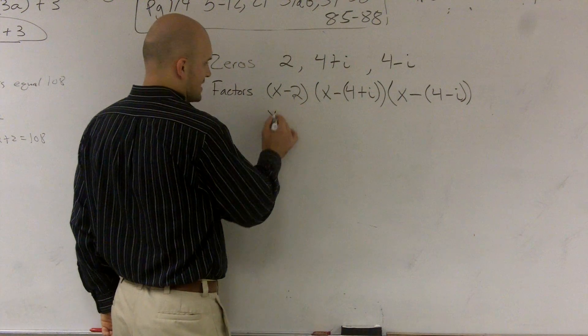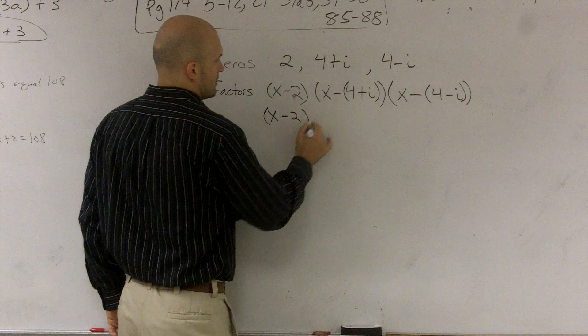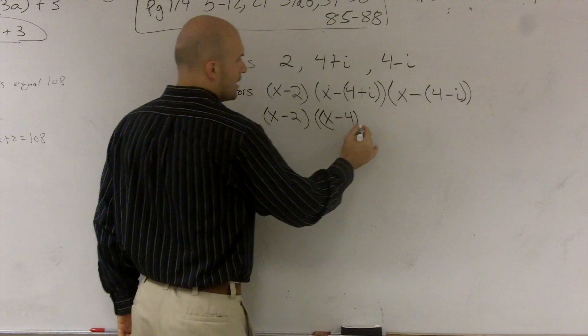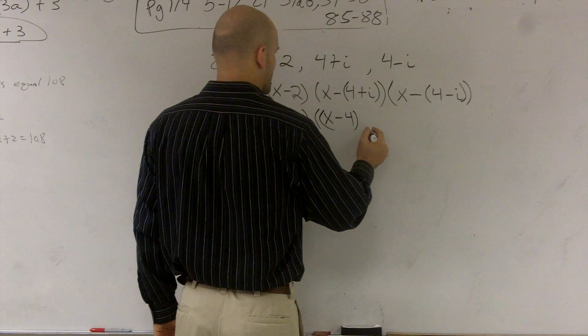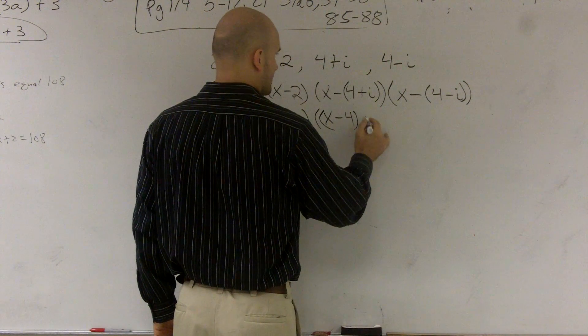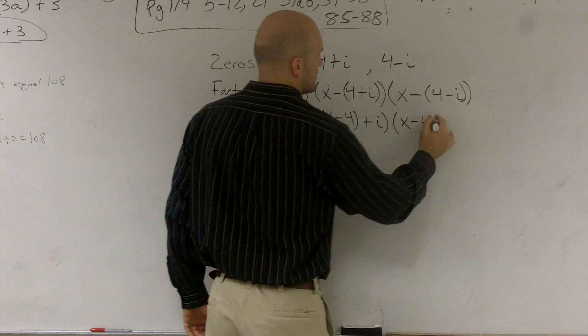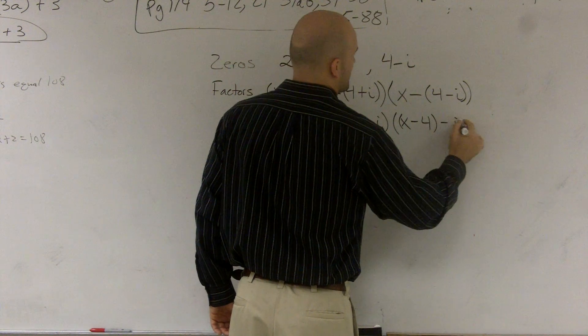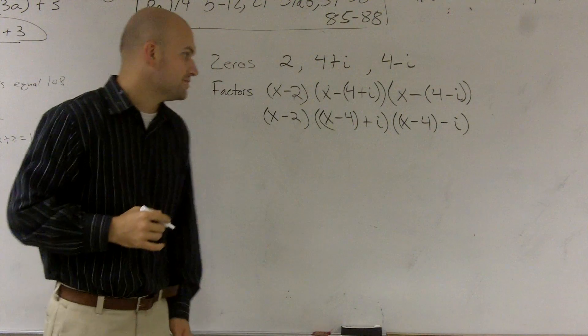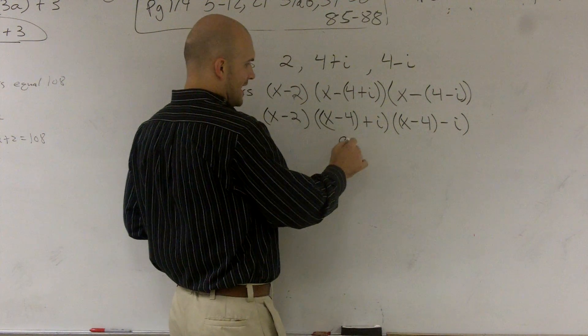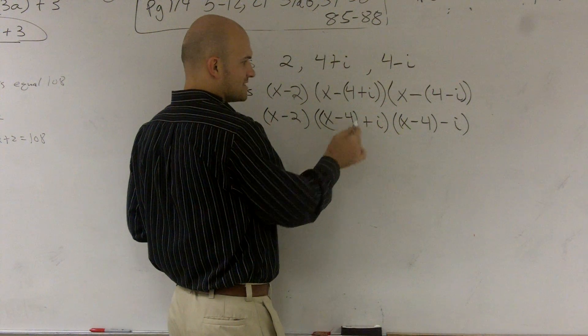So I'm going to write this as (x-2) times - and I'm going to group the x-4. Let's see, (x-4+i) and (x-4-i). And the reason why I want to do this is because now, if you look at this, this is really kind of like an a. Let's pretend x-4 is a.